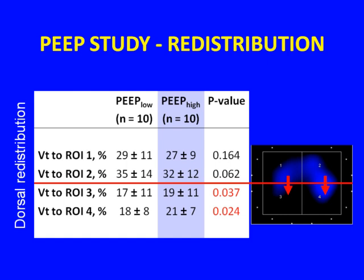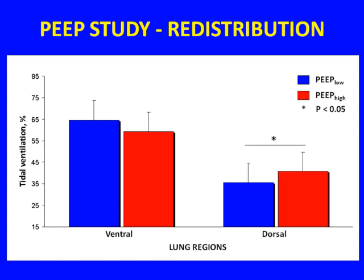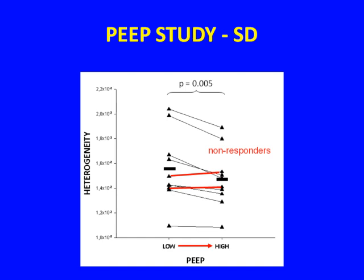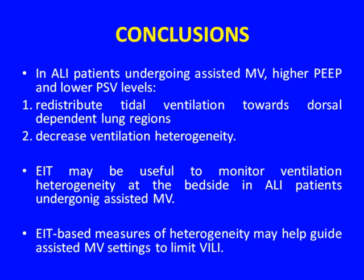With increasing PEEP and without any change in tidal volume, we observed a redistribution of ventilation toward dorsal regions passing from lower to higher PEEP levels. Higher PEEP levels were associated with higher dorsal ventilation. Our global heterogeneity index significantly decreased with higher PEEP levels, and again we identified two non-responders to our treatment.